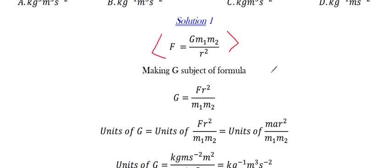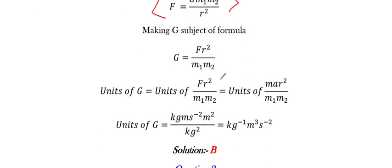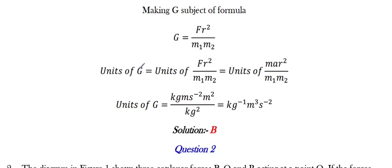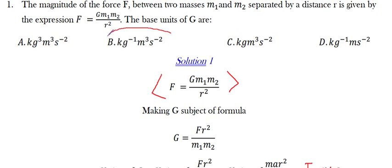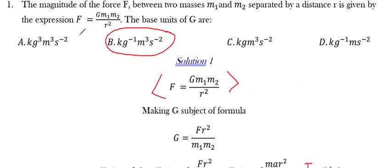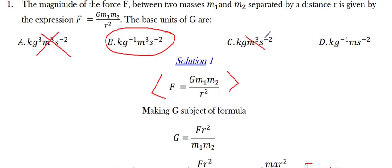This expression is for the gravitational force between two masses M1 and M2. When you make G the subject of the formula, you obtain G equals F R squared divided by M1 M2. Therefore, the unit of G equals the unit of F R squared over M1 M2, which equals the unit of M A R squared over M1 M2, since F equals M A. This corresponds to option B. Options A, C, and D are different and wrong. The correct option is B.